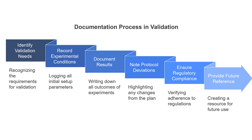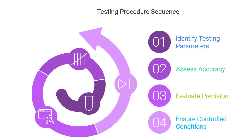Tip 5: Document everything. Maintain thorough documentation throughout the validation process. This includes recording all experimental conditions, results, and any deviations from the plan protocol. Proper documentation is essential for regulatory compliance and future reference. Tip 6: Perform comprehensive testing. Conduct a series of tests to evaluate all relevant parameters. For example, assess accuracy by comparing results to a known standard and evaluate precision by performing replicate analyses. Ensure that all tests are performed under controlled conditions.